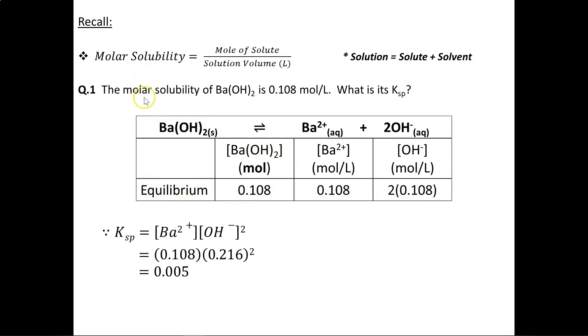The question states, the molar solubility of barium hydroxide is 0.108 moles per liter, meaning at equilibrium, 0.108 moles of barium hydroxide can dissolve in one liter of solution. It's asking, what is its Ksp value? We write out our Ksp expression: Ksp equals the products, or what is dissolved, divided by what is undissolved. Because this is a solid, we don't have to factor it in, just worry about the barium and the hydroxide.